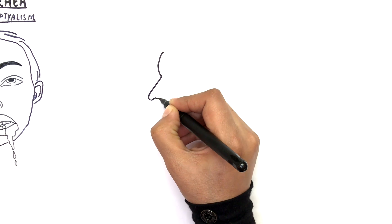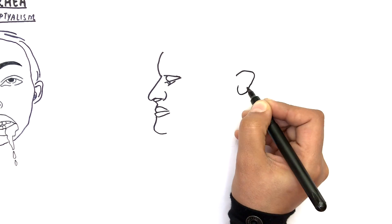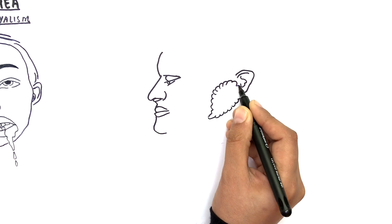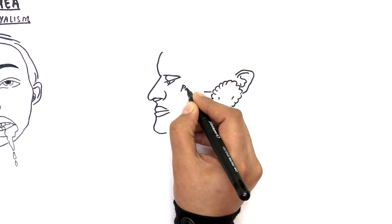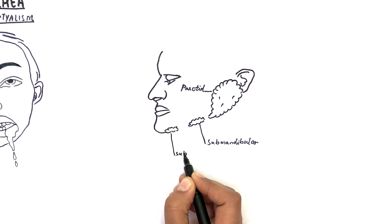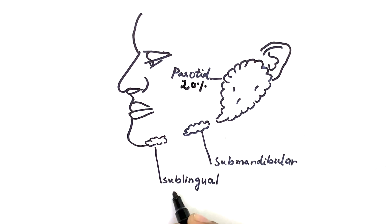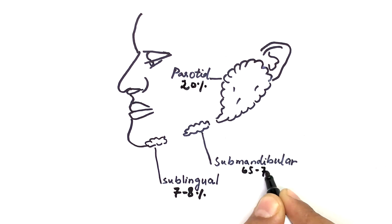Before moving on with sialorrhea, let's look at the contribution of the major salivary glands in saliva production and their nerve supply. Humans have three pairs of major salivary glands: the parotid gland, the submandibular gland, and the sublingual gland. The parotid gland accounts for 20% of saliva production, the sublingual gland accounts for 7 to 8%, and the submandibular gland accounts for the greatest amount, about 65 to 70%.